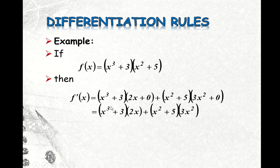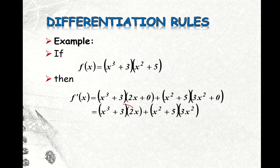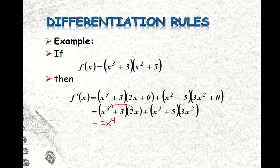Something went wrong when we distributed this part. When multiplying these two terms, I was multiplying the 3 with 2x, but it should be the x. So it should be equal to 2x times x cubed, which gives us 2x to the fourth — not 6x as shown in the previous video. Then this one plus 2x times 3 gives us 6x.